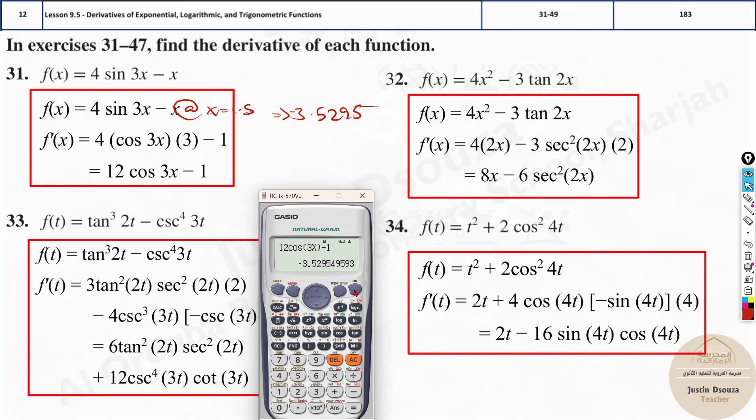Now over here let's do the next one. You need to do shift dy by dx, 4x squared minus 3 tan 2x, close the bracket, and x value again assume 1.5 itself. Note this answer and please double check before you finalize the answer. At x equals 1.5 the value we got is 5.878. Now that is derived.